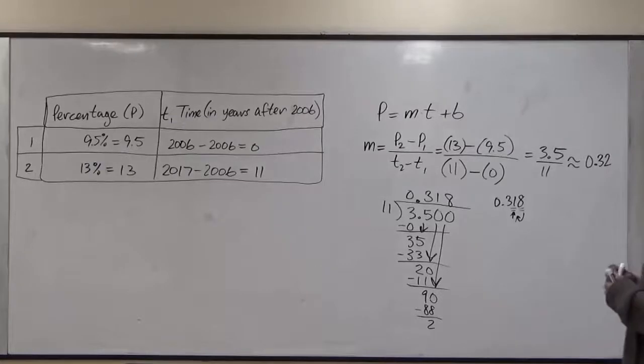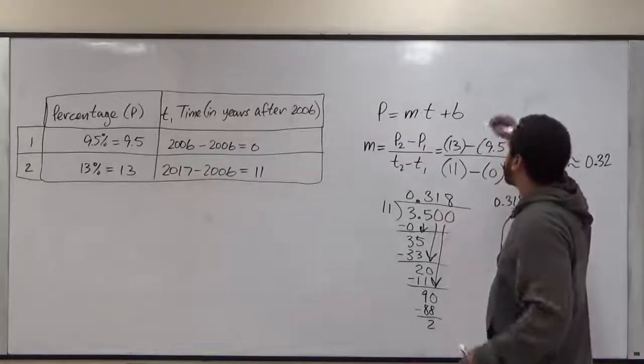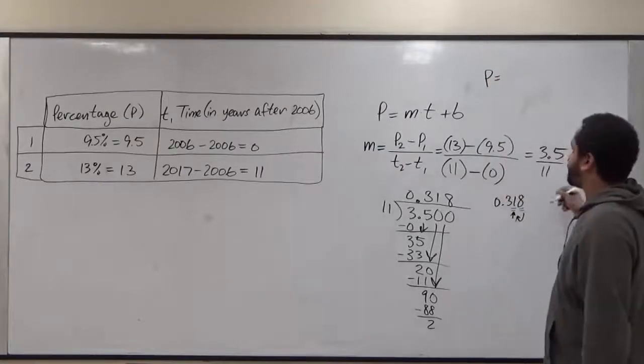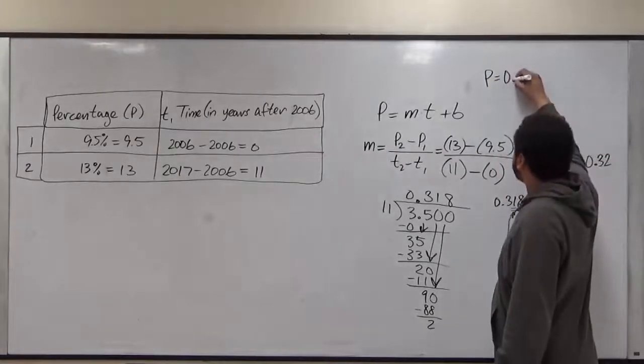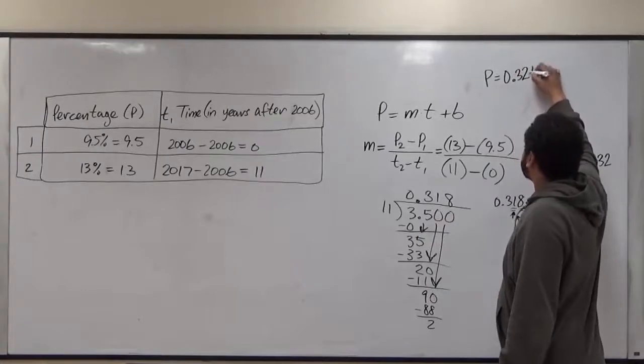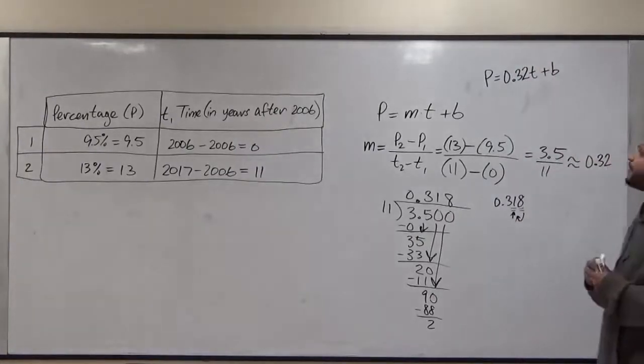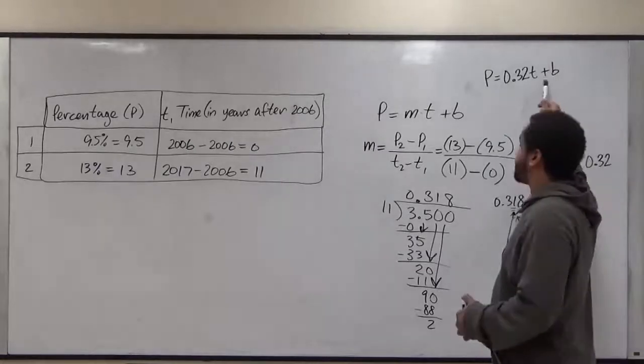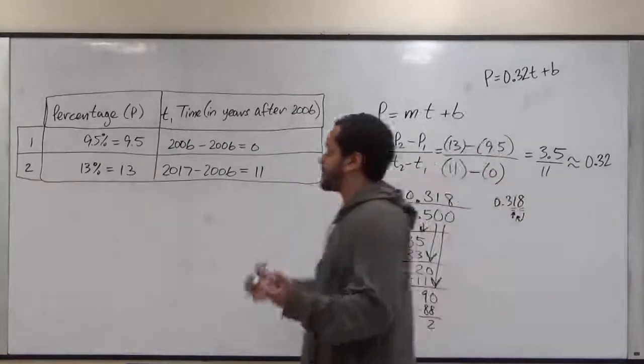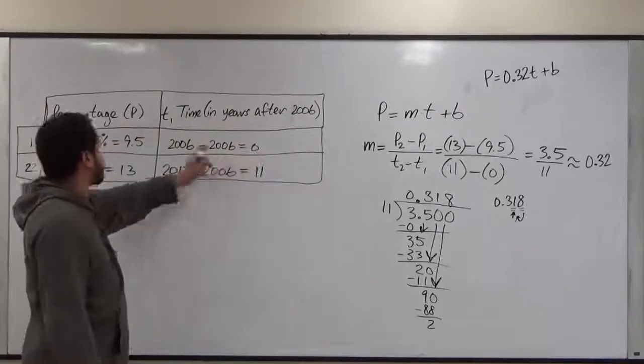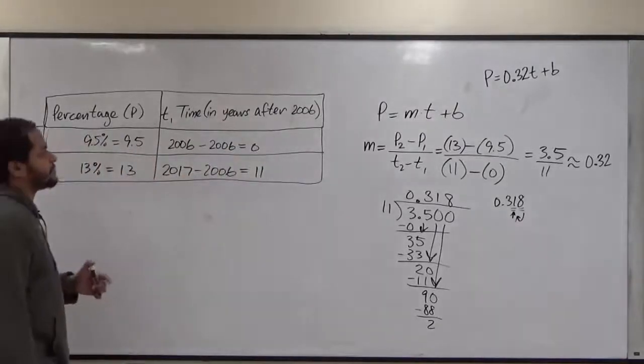Now we're almost there for the linear model of this equation. So we have p equals 0.32 times t plus our y-intercept value. All we're missing here right now to complete this is the y-intercept value. And what we're going to do to get the y-intercept value is we're going to plug in the first coordinate or the second one so we can solve the linear equation model.